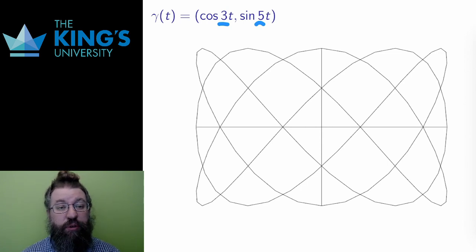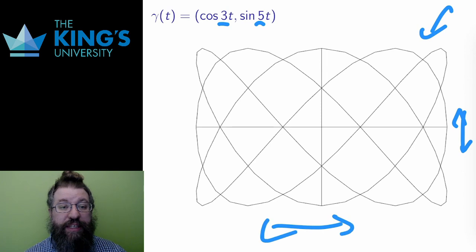These numbers change the periods. The cosine oscillates 3 times as fast as the circle, and the sine oscillates 5 times as fast. The result is this pattern of oscillations, where the x and y coordinates are going up and down, or left and right at different speeds. The movement starts counterclockwise, and then continues in this complicated shape.